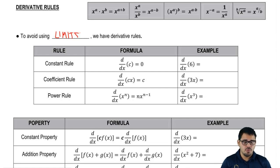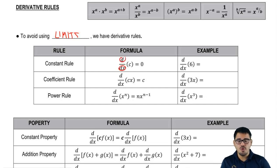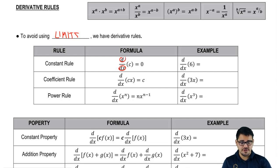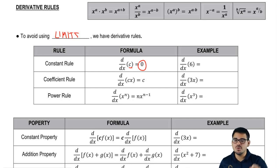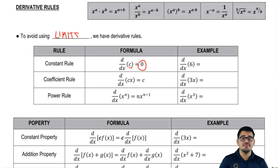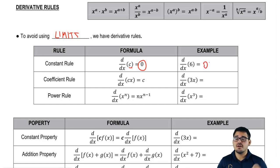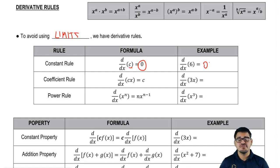The first one is going to be the constant rule, where we're going to talk about notation. We have d/dx, which means a derivative in terms of x. The derivative in terms of x of a constant is equal to 0. So whenever we have any constant, our shortcut tells us the derivative is just 0. For example, the derivative of 6 — well, 6 is a constant, so the derivative is 0. That was a quick shortcut; no more crazy limits and long ways.